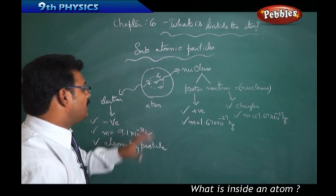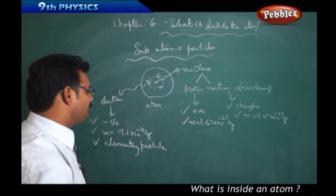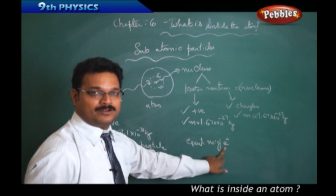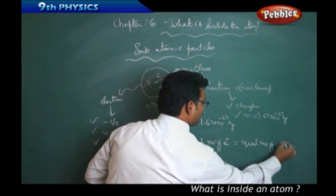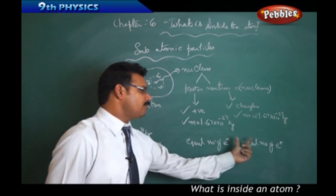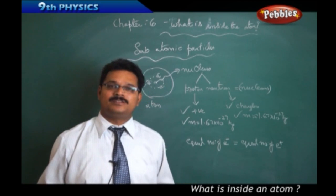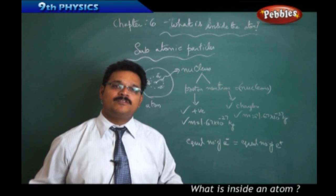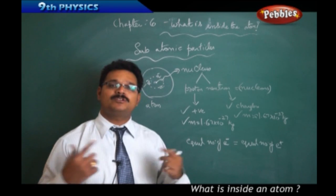It was also understood that the atom is neutral, consistent with Dalton's theory, because the atom has an equal number of electrons and an equal number of protons. That means however much negative charge you have, you have an equal amount of positive charge, making the total charge zero. Our human body is also neutral — that is why we don't feel any electric shock. Each and every atom in our body is neutral, having equal negative and positive charges.